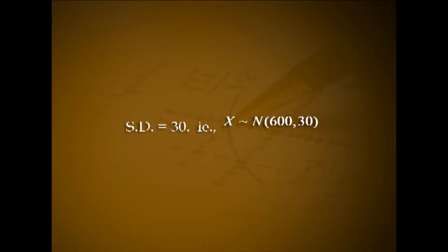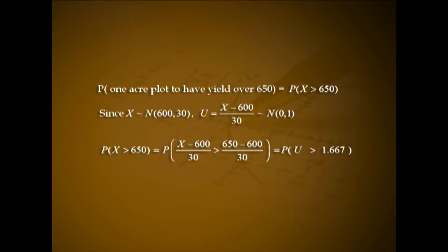Problem 1: The mean yield of a crop in one-acre plots is 600 kg with a standard deviation of 30 kg. Assuming the data follows normal distribution, how many one-acre plots in a batch of 1000 plots would you expect to have yield over 650 kg and below 600 kg? Solution: Let x be the variable denoting yield per one-acre plot in kilograms. Given x ~ N(600, 30). P(x > 650) is required.